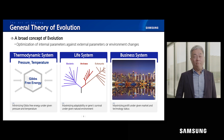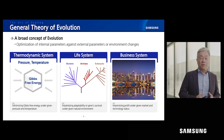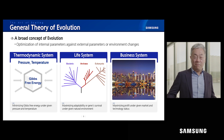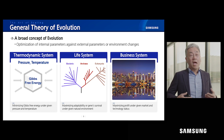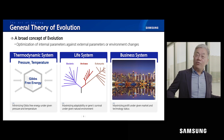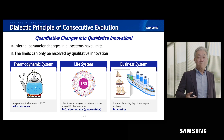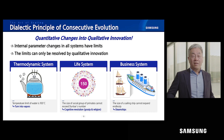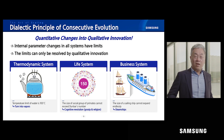So what's evolution? Among multiple definitions: optimization of internal parameters against external parameters. The same principle applies to every system — for example, a thermodynamic system, a life system, business. An easy example: us under the COVID-19 pandemic — somehow we have evolved. There are many textbook-level principles, for example variations and inheritance. But let's take a dialectic view and state that quantitative changes lead to qualitative innovations.